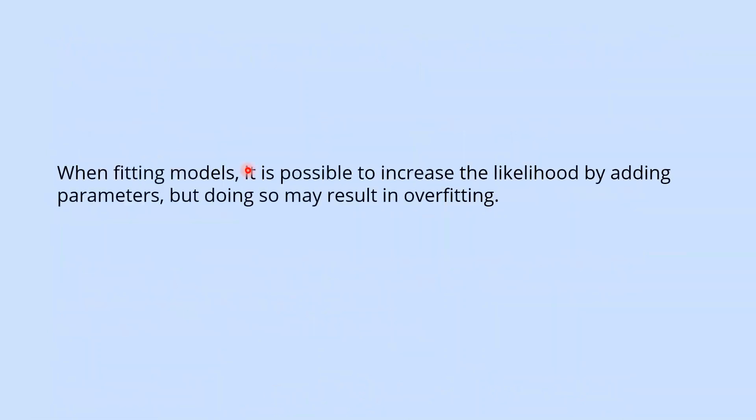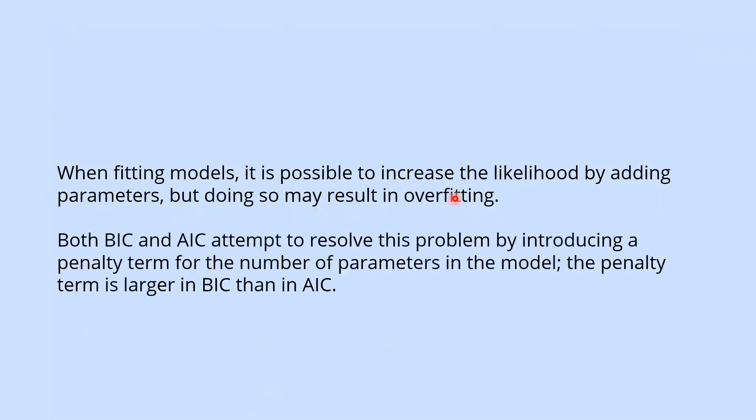When fitting models, it is possible to increase the likelihood by adding parameters, but doing so may result in overfitting. Both AIC and BIC attempt to resolve this problem by introducing a penalty term for the number of parameters in the model. The penalty term is larger in BIC than in AIC.